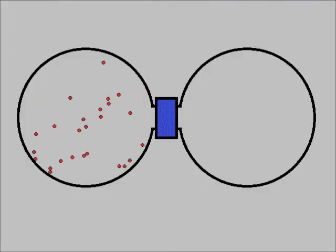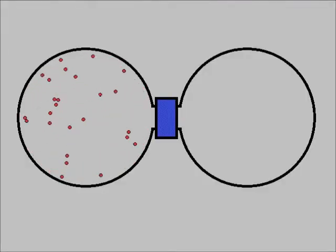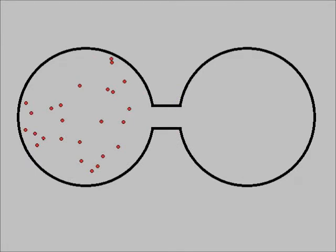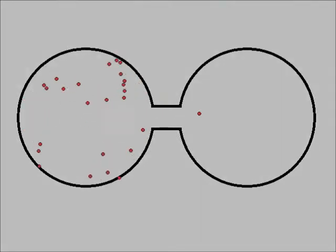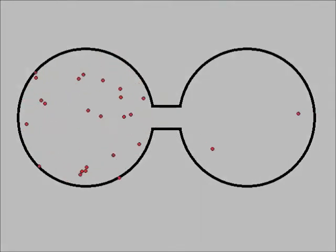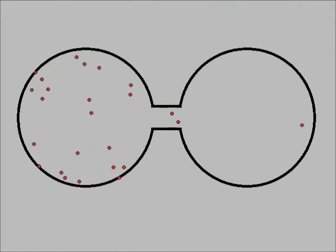A common example is a gas in a half-plugged container. When the plug is removed, it is highly improbable that all of the gas would remain on one side. The overwhelmingly more probable situation is that the gas gets evenly distributed between both halves of the container.